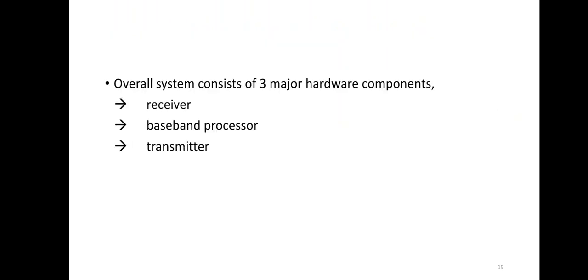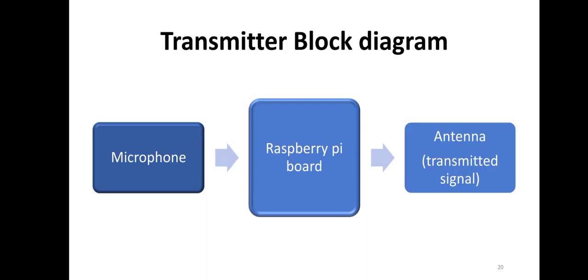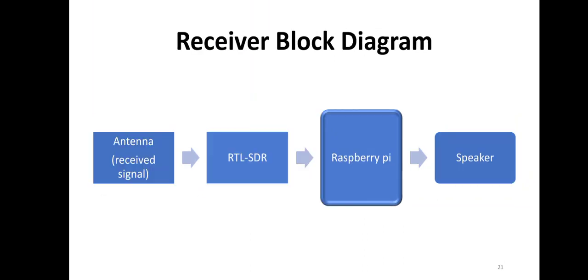The overall system consists of three major hardware components: first is the receiver, then the baseband processor, and after that the transmitter. This is the generic block diagram of the transmitter, and this is the generic block diagram of the receiver.